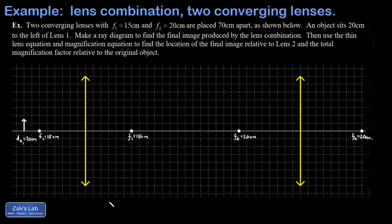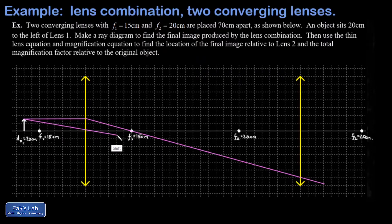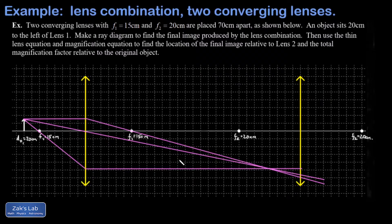We start by taking a ray headed parallel to the principal axis off of the object; that ray refracts through the focus of the first lens. Then we take a ray headed through the center of the first lens, which is unrefracted. Finally, we take the principal ray that passes through the near-side focus, and that ray is refracted parallel to the principal axis. Those rays all converge at a single point, and that's where the first image of the arrowhead forms.